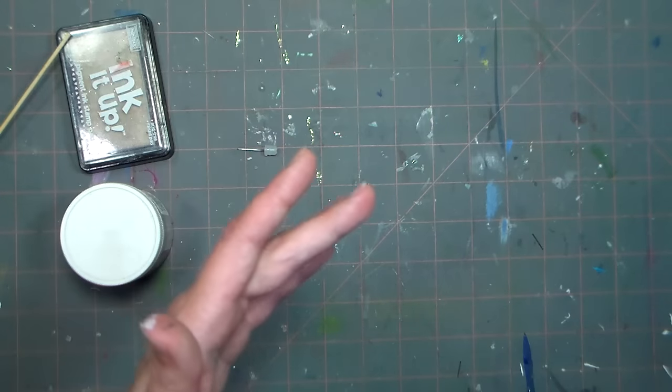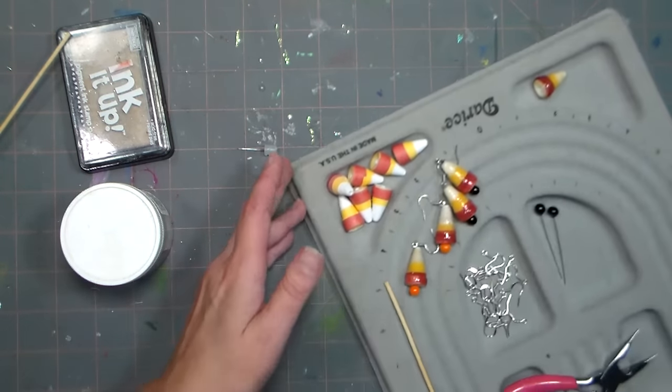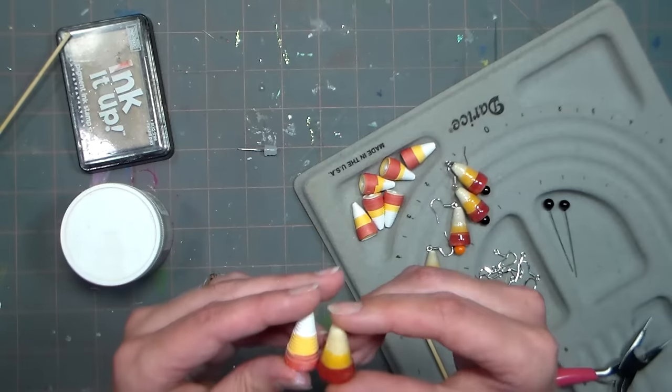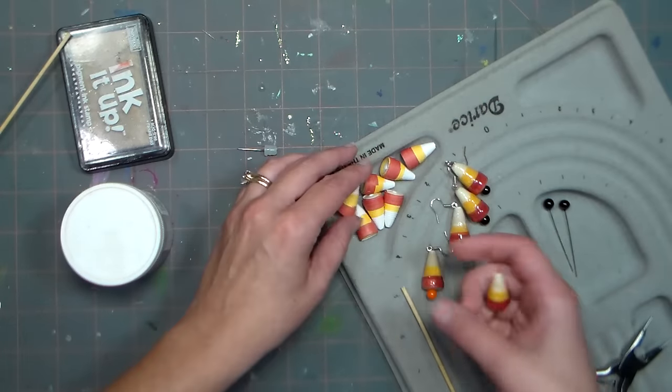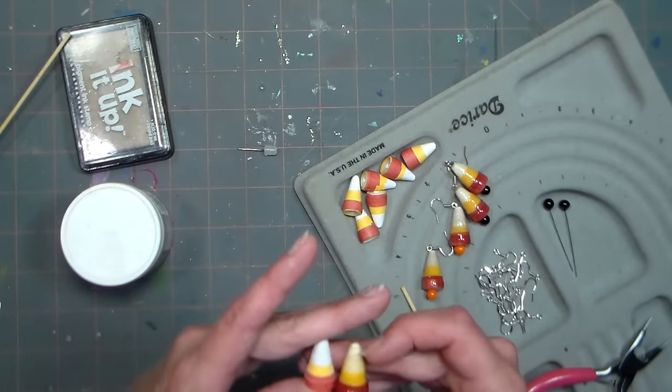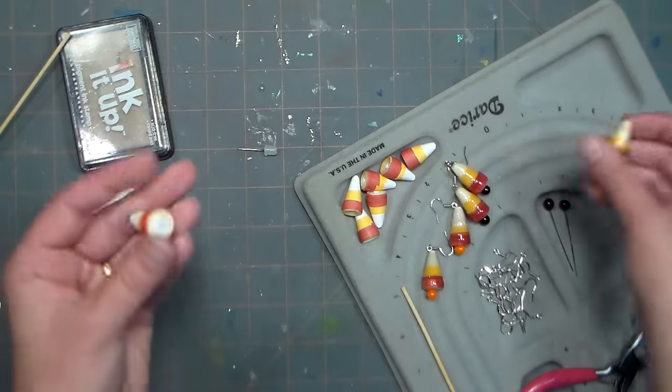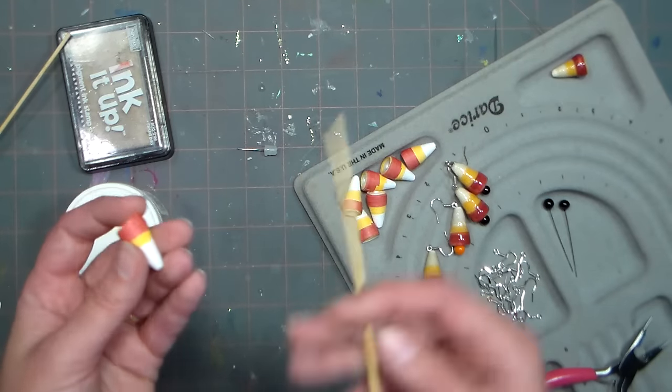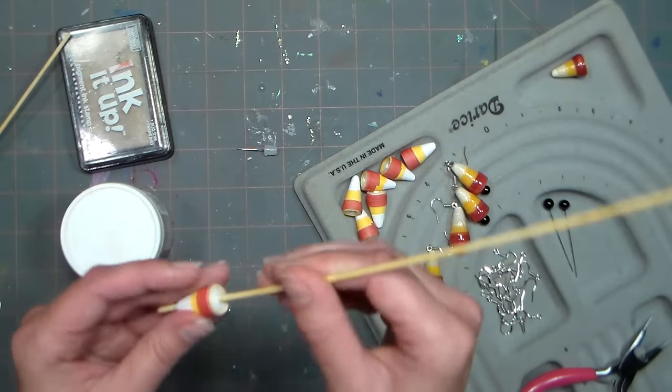For drying I set them in my homemade drying board, which is a couple sheets of foam core that I've glued together with a bunch of sewing pins stuck in. It's perfect for holding beads while they're drying. I've got some beads I've already finished making, so I'm going to take one and show you how to glaze it.